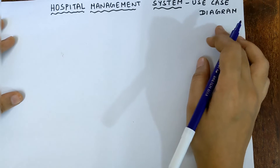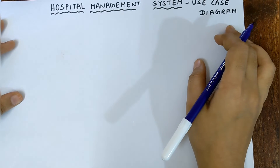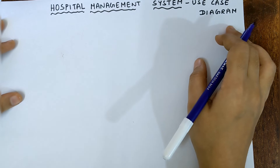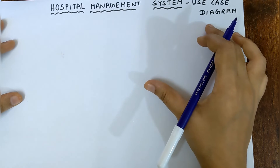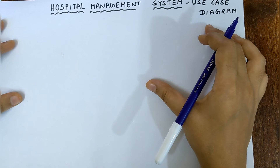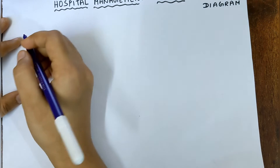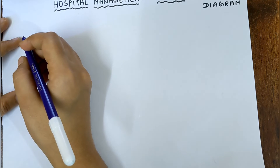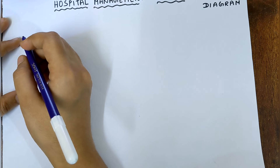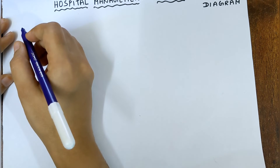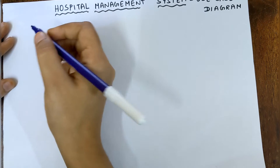The first step for drawing the use case diagram is we have to choose the actors. We learned in the rules that there should be at least two actors in a use case diagram — two actors should compulsorily be there, but you can have even more than two. Also, an actor does not necessarily have to be a real person; it can be some system or a group of people.